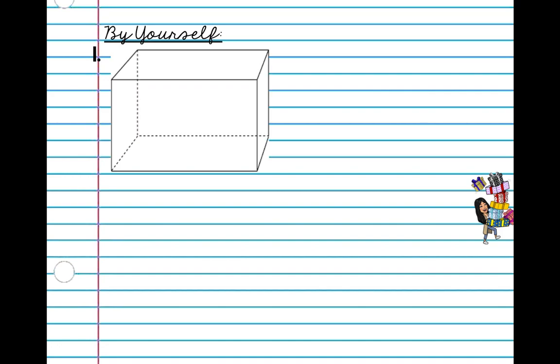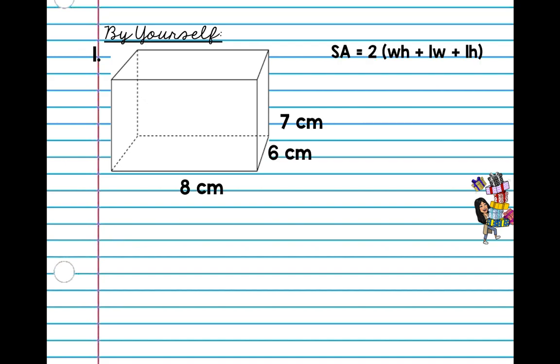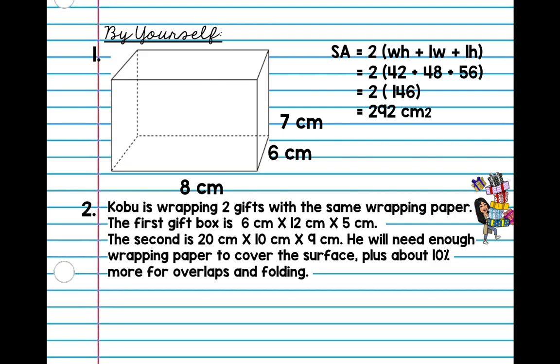Now you're going to do one by yourself. Go ahead and find the surface area of this rectangular prism using the formula — pause the video and try to solve it. How did you guys do? The answer is 2 times (42 + 48 + 56), which equals 2 times 146, which equals 292 centimeters squared.